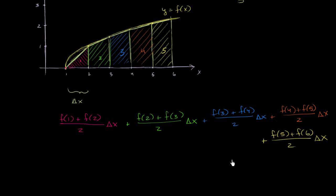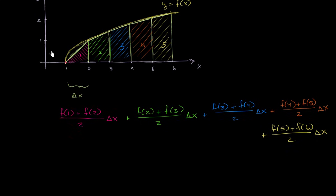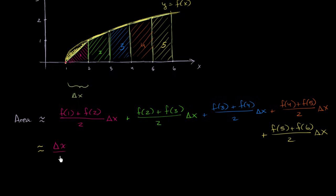Let's see how we can simplify this. All of these terms have a one-half delta x, so let's factor that out. This is our approximation of the area — it's just an approximation, and it looks like an underestimate since we're losing some area between the trapezoids and the curve. The area is approximately equal to delta x over 2, times the following expression.